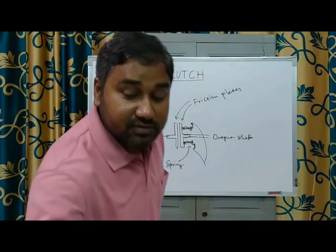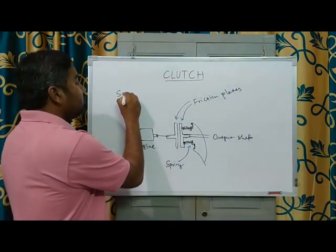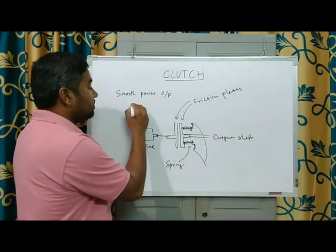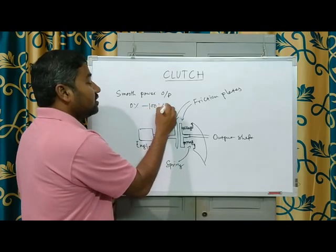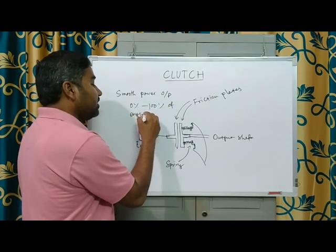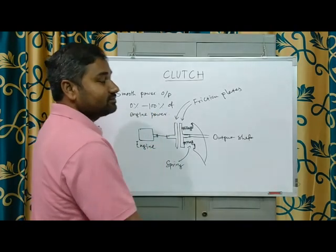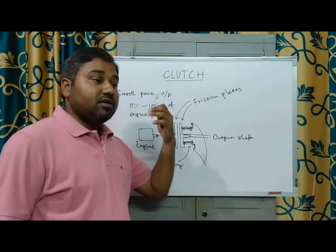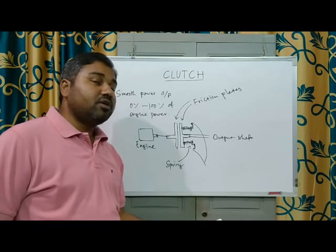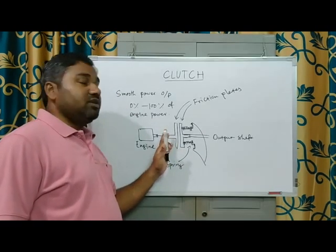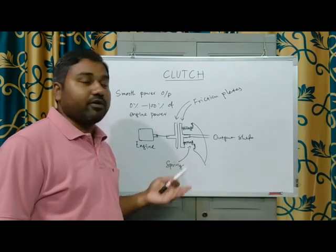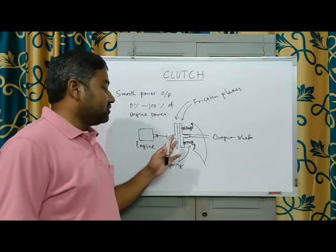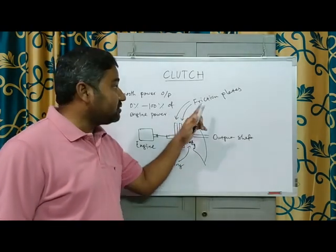The advantage is smooth power output from 0% to 100% of engine power. Without this, the engine would be operating in steps — either 100% on or 0% on. Now, the friction plates after some time wear off. The simple method is to replace the clutch and your vehicle is as good as new. So during the service we generally change the friction pads of this plate.